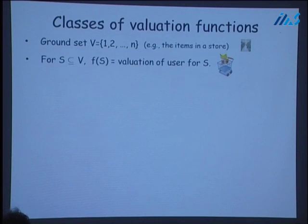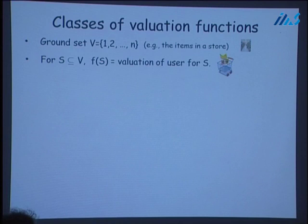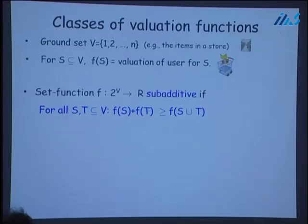We are in a combinatorial setting. We have a ground set V of N items, and given a set S, I'll denote by F of S the valuation that the user has for the set S. Throughout this talk, I'm going to consider well-studied subclasses of sub-additive evaluations, which express substitutes but no complementarities.